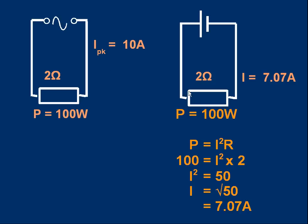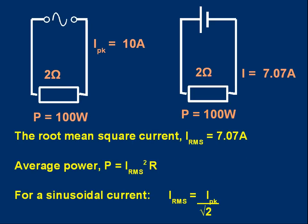...which would produce the same heating effect, the same power output, as this alternating current with the peak value of 10 amps. Think about that carefully: it's the steady current which produces the same heating effect and the same power output as this alternating current.